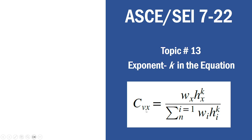The equation is: CVX equals WX times HX raised to K, divided by the summation of WI times HI raised to K, for I varying from 1 to N.